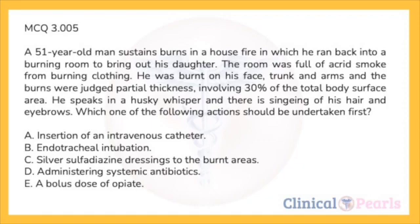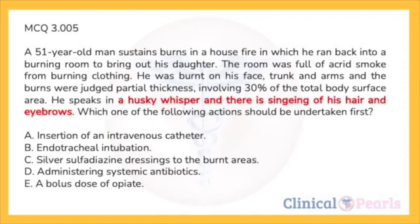Next: a 51-year-old man sustains burns in a house fire. He ran back into a burning room full of acrid smoke from burning clothing. He was burnt on his face, trunk, and arms — partial thickness burns involving 30% of total body surface area. He speaks in a husky whisper and there is singeing of his hair and eyebrows. Which action should be undertaken first? A: insertion of an IV catheter. B: endotracheal intubation. C: silver sulfadiazine dressings. D: systemic antibiotics. E: bolus dose of opiate. This man has life-threatening injuries; the ABC of resuscitation — airway, breathing, circulation — must be remembered.